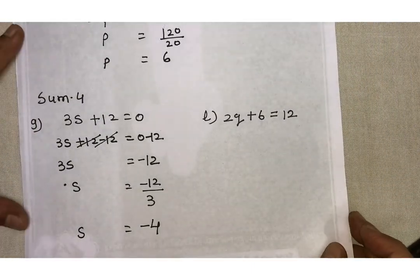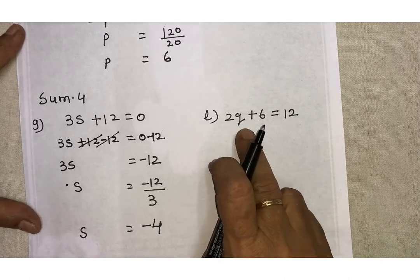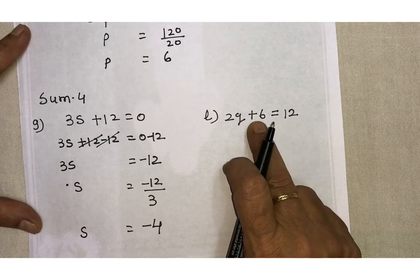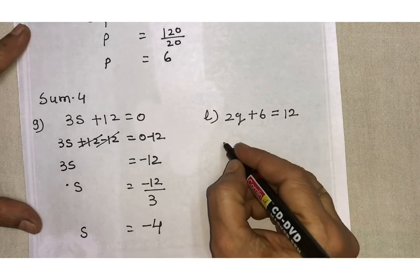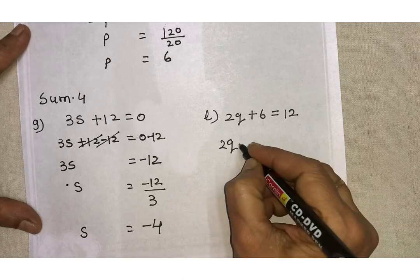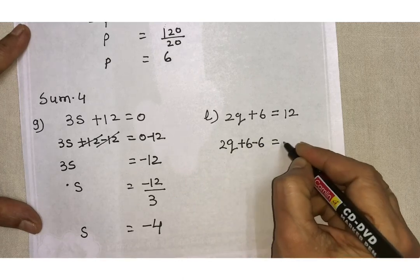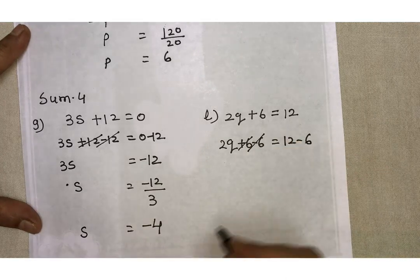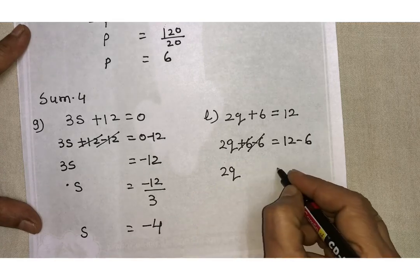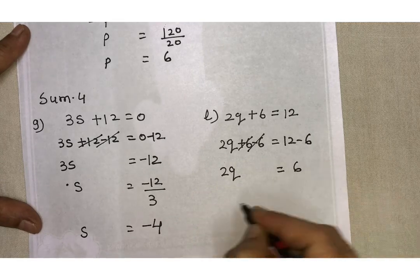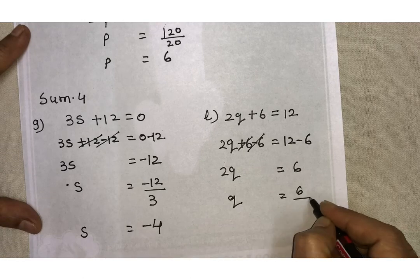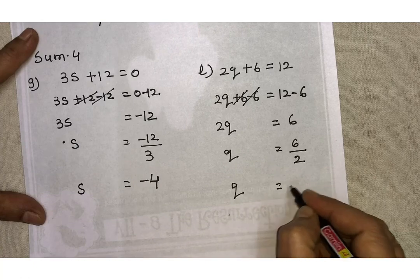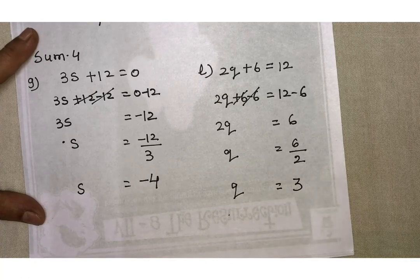One more sum: 2Q plus 6 equals 12. We subtract 6 from both the sides. So 2Q plus 6 minus 6 equals 12 minus 6. Plus 6 and minus 6 cancel, giving 2Q equals 6. Then Q equals 6 upon 2, so Q equals 3.